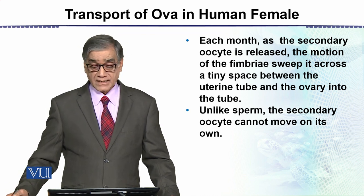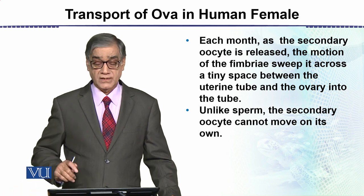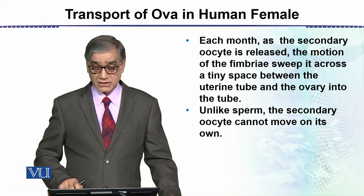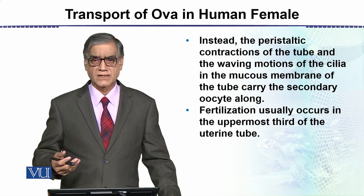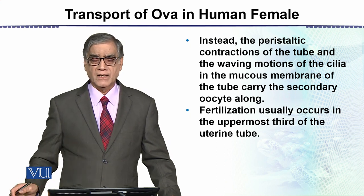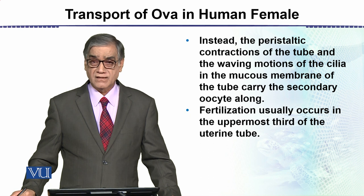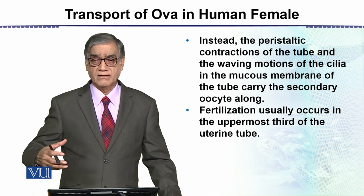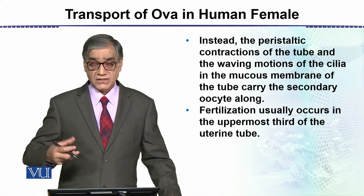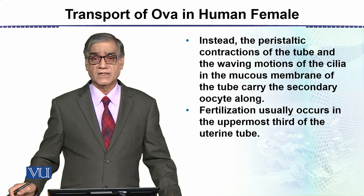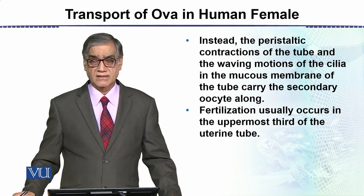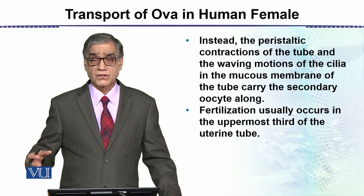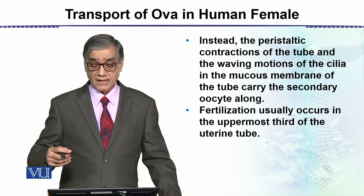Unlike sperms, the secondary oocyte cannot move on its own, because it has no cilia or flagella. So its movement is entirely by the contractions — what we can call peristaltic movements — of the uterine tube.